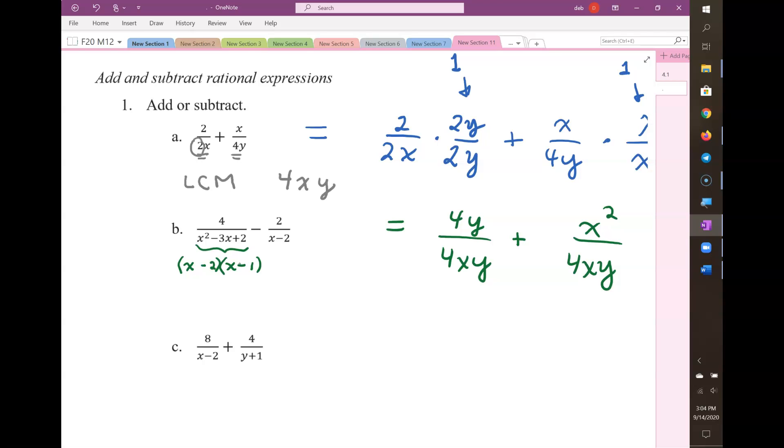Now we can see that the second term needs a factor of an x minus 1 in the denominator in order to have common denominators. We can only multiply the denominator by x minus 1 if we also multiply the numerator by x minus 1. So now we're going to have 4 over (x minus 2)(x minus 1) minus 2(x minus 1) over (x minus 2)(x minus 1).